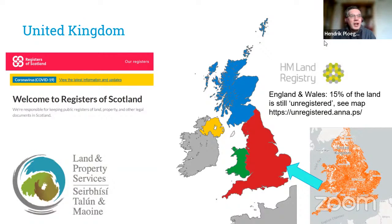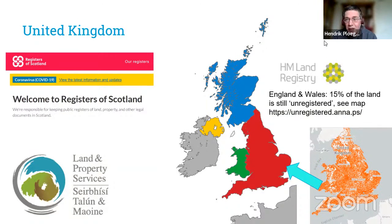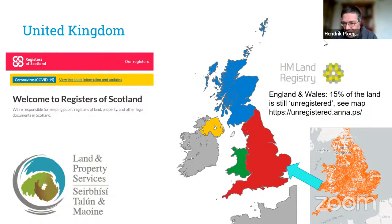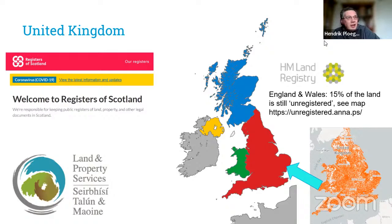There is also a change that started from 1925 — at that moment a new land administration was introduced in England and Wales. Before that, people kept their own deeds to prove they were the owner. Until now, fifteen percent of the land is still unregistered. You can find this on a nice website where they also explain how they made the map, which we will also discuss next week along with the video 'Who Owns England.'